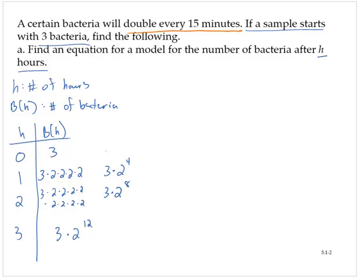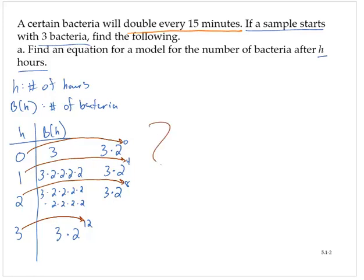Notice that this does follow three times two to the zero. Now let's look at the input and the exponent on the two. We need zero to go to zero, one to go to four, two to go to eight, and three to go to twelve. If I take any of those inputs h and multiply them by four, I get the exponent on two. So I can write the model b of h is equal to three times two to the 4h.